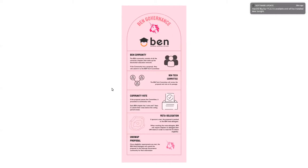If the community vote meets quorum, it passes to the BEN meta-delegation. At the meta-delegate level, BEN will require all chapters to delegate their Uniswap tokens in order to meet the 10 million UNI eligibility threshold, so we can push it on to the Uniswap community to vote on it. We want to make it a more democratic process that stimulates engagement throughout the BEN ecosystem and network.